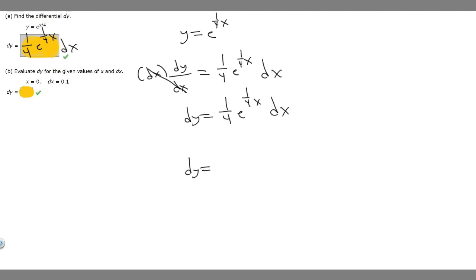So dy equals 1 over 4 times e to the 1 over 4 times 0, right, because x equals 0, then times dx, which is 0.1. So e to the 1 over 4 times 0 is just e to the 0. So e to the 0 is just going to be 1. So we have 1 times 1 over 4, which is just 1 over 4.